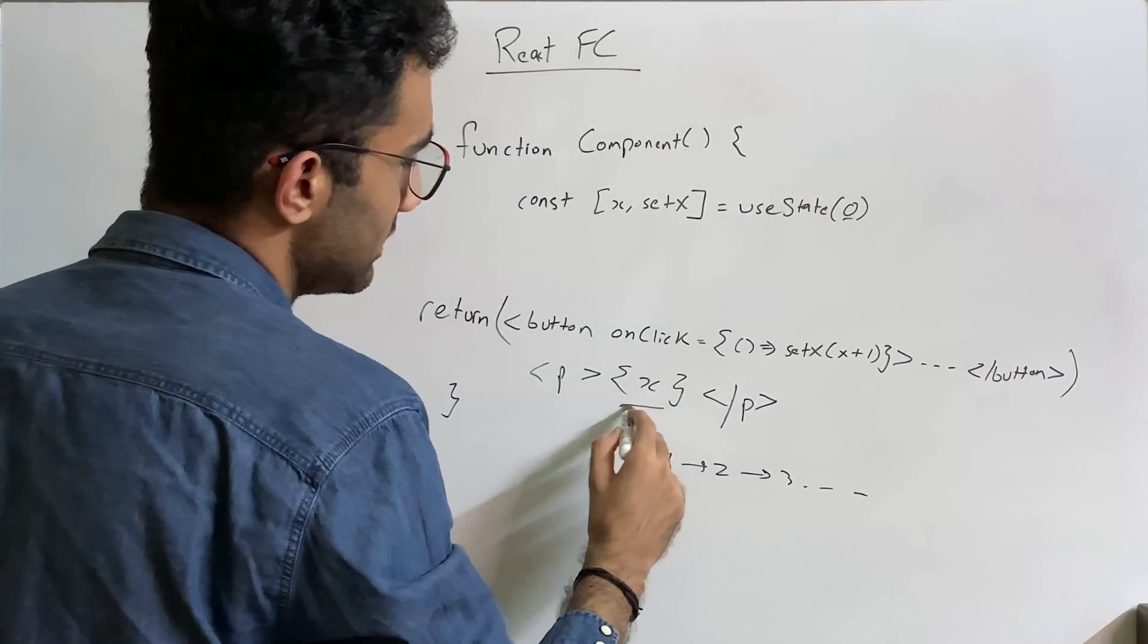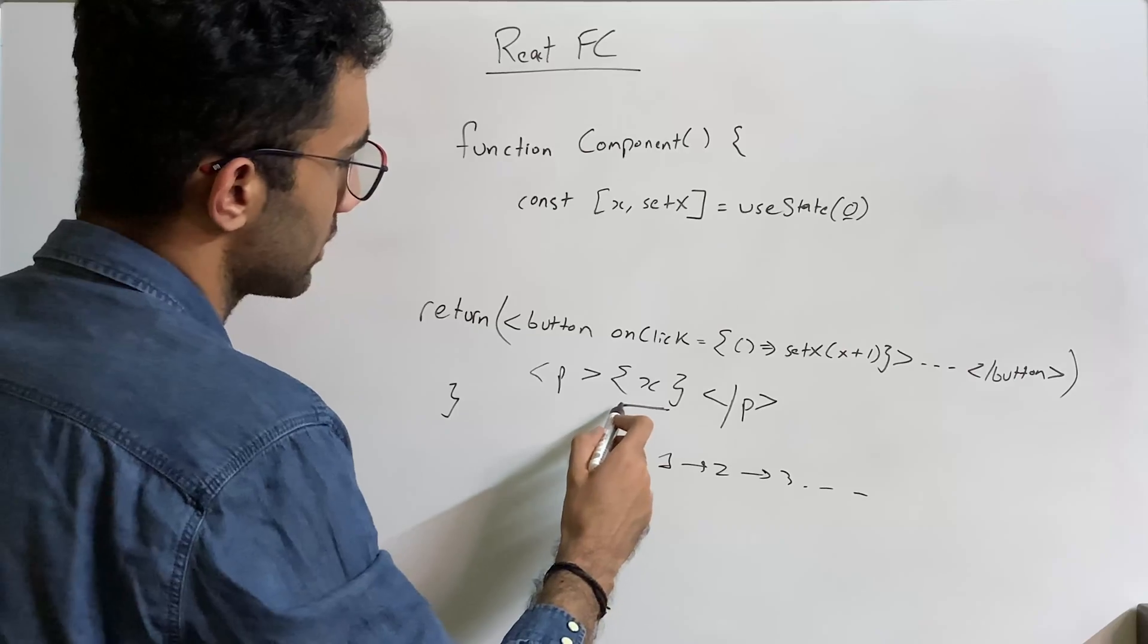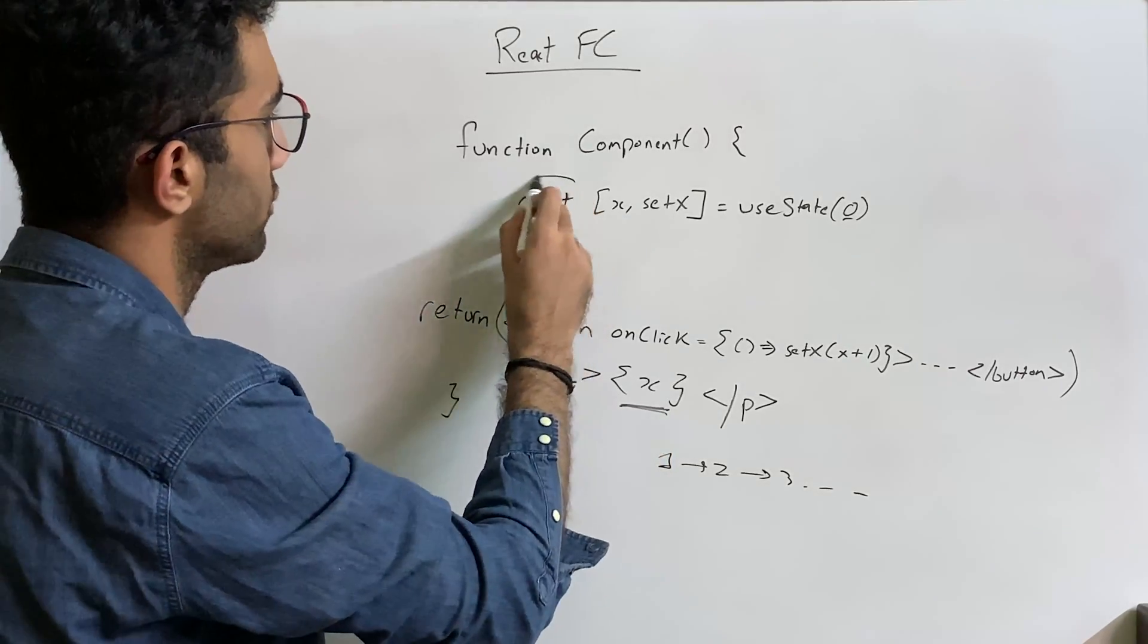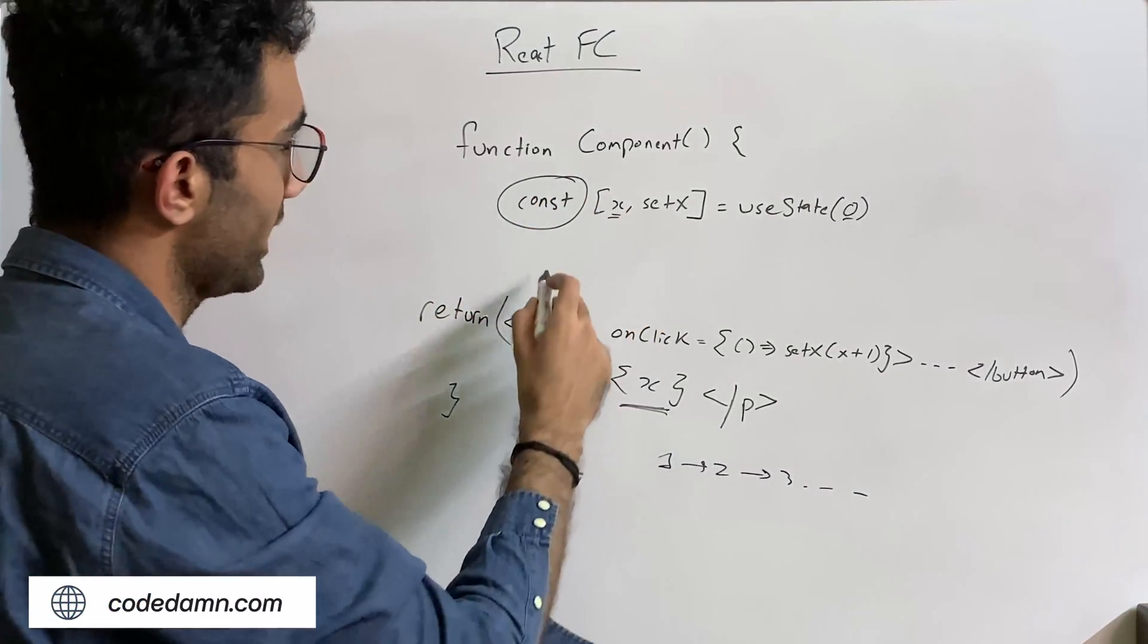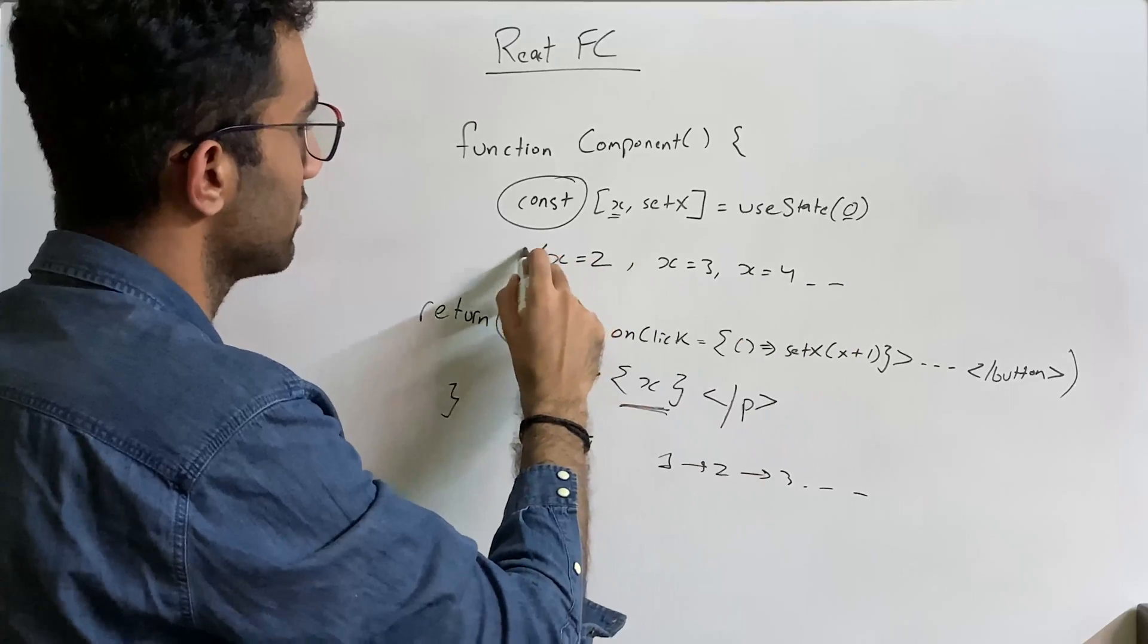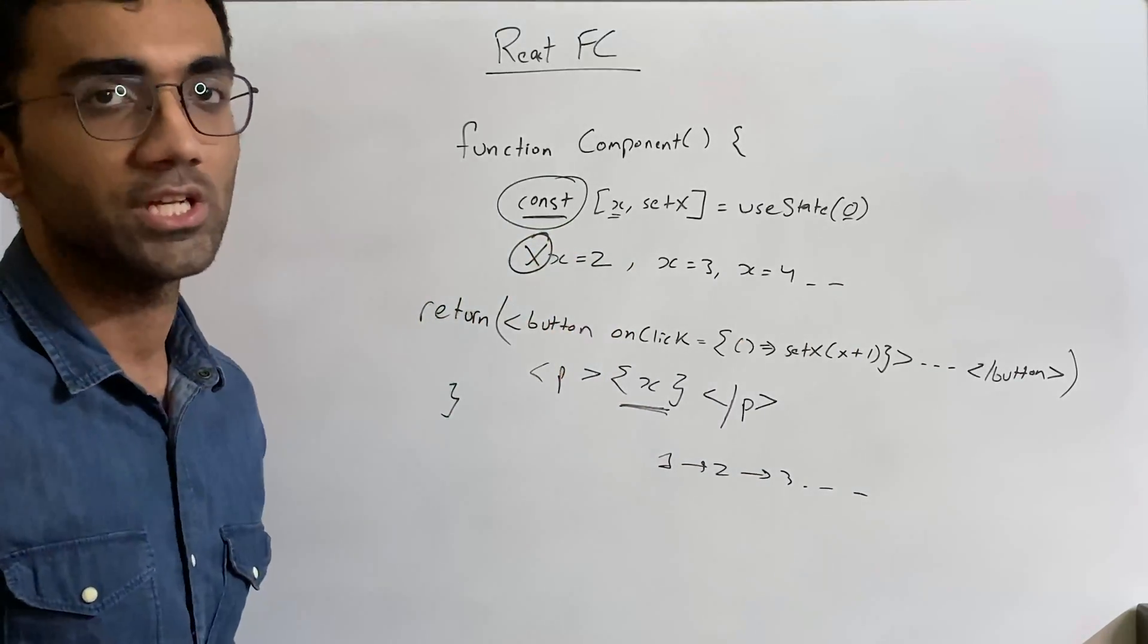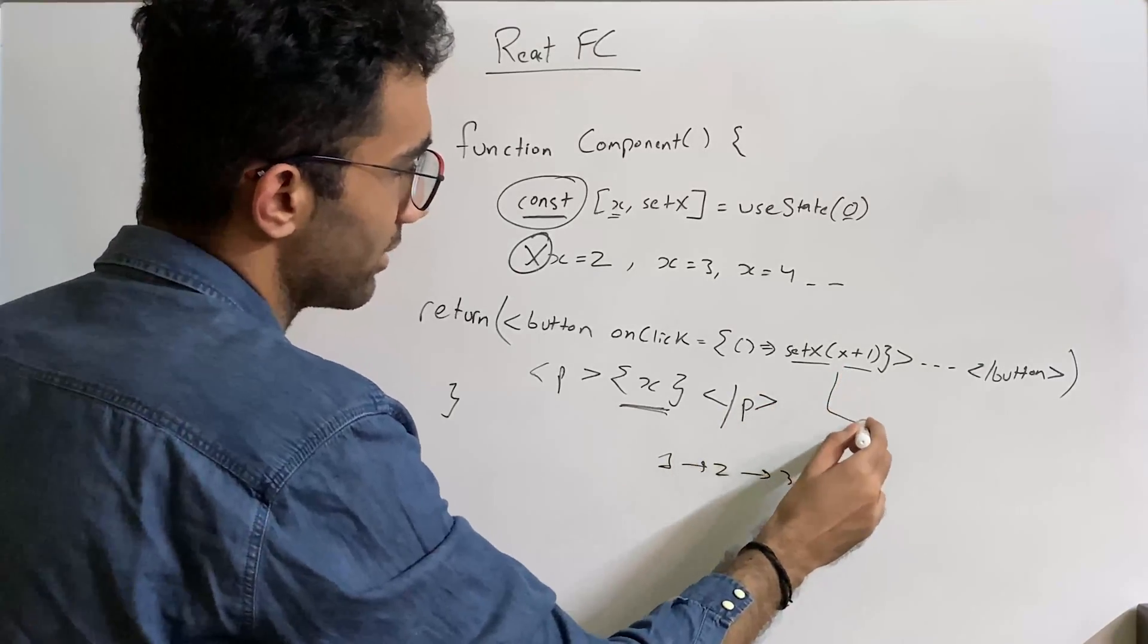So you can see, you can clearly see x is changing, right? But this sounds a bit weird if you are seeing this for the first time and you see that you are using a const modifier here for declaring this x variable, right? That means you technically cannot do x equal to 2 or x equal to 3 or x equal to 4. You cannot do this stuff. This is not allowed because you are using a const.